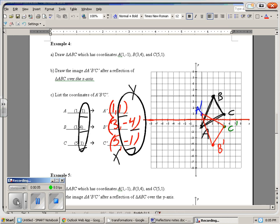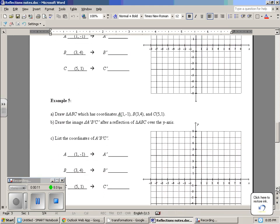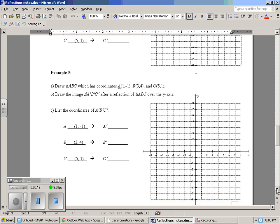We are finishing up our notes on reflections. Now it says draw triangle ABC which has coordinates (1, -1), (3, 4), and (5, 1).